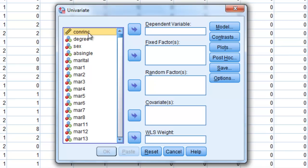ConRinc is my dependent variable. It needs to be measured on a continuum. Notice how it has this little ruler to represent that this is a scale variable here. So I select that and move it to my dependent variable box.